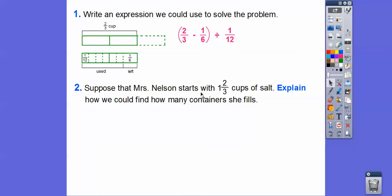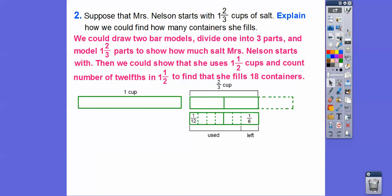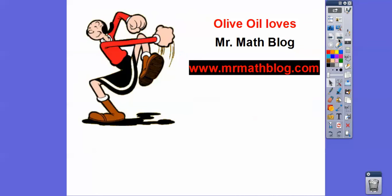Suppose Mrs. Nelson starts with 1 and 2/3 cups of salt instead. How many containers would she fill? We can use the full one-cup bar model plus the 2/3 section from before. The half-cup portion we calculated counted for 6 containers. So this half is 6, this half is 6, and this half is 6 — giving us 18 containers total if she started with 1 and 2/3 cups. Kind of tricky — I hope that made sense. Take care, thank you.